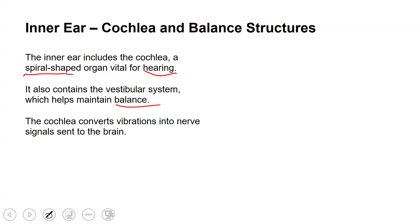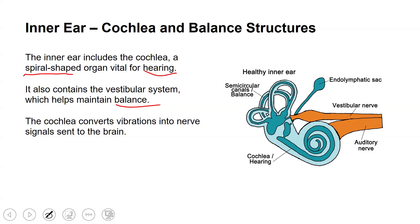The sound waves are captured by the pinna, move through the ear canal to the eardrum, and once they hit the eardrum the ossicles amplify them and send them to the inner ear. It is the work of the cochlea to convert the vibrations amplified by the ossicles into nerve signals, which are sent to the brain. The cochlea converts the vibrations into electrical signals that are sent to the brain for interpretation.